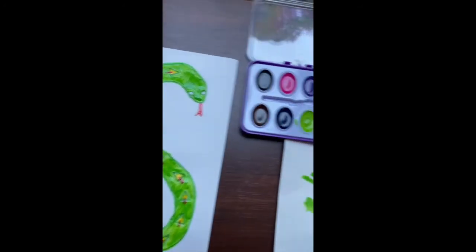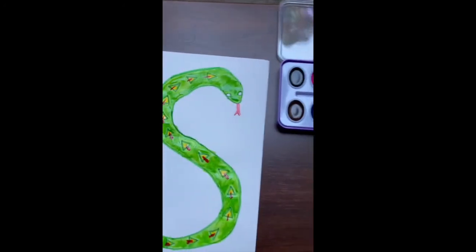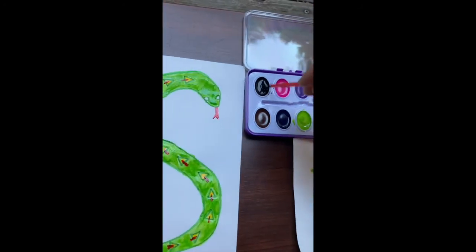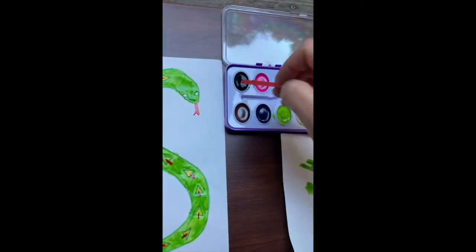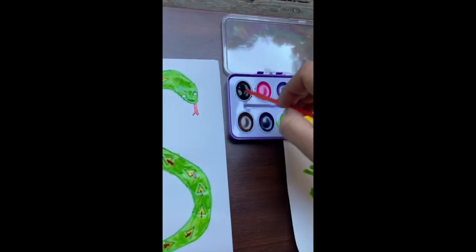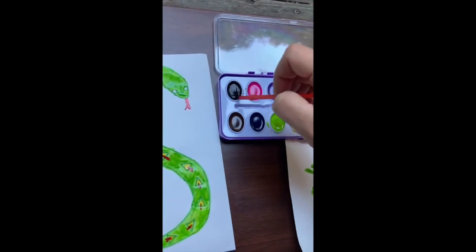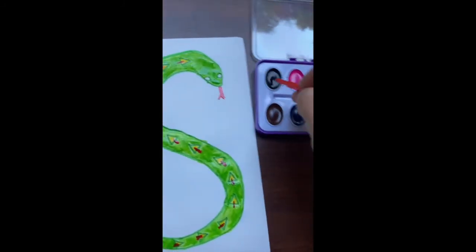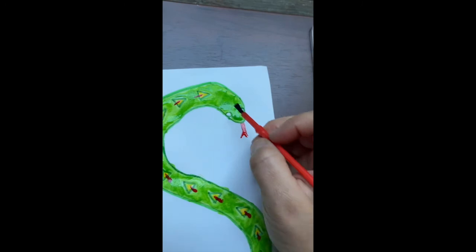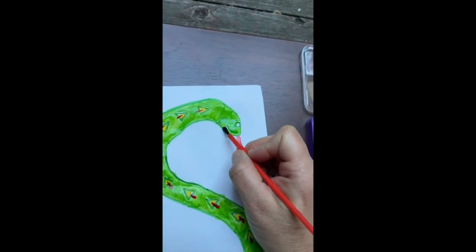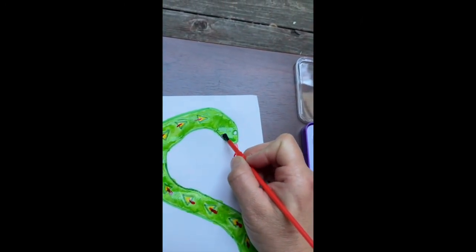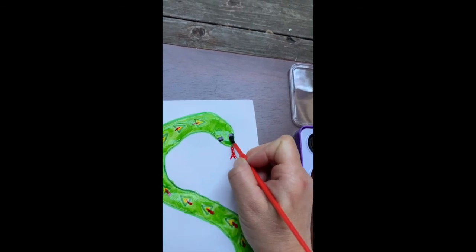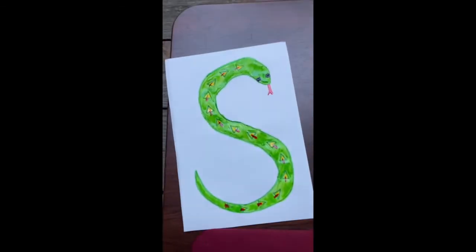And then the last color we need is black. I think it's this one. And again, just like with the red, I'm just adding a little bit of water, but I'm really mixing it in so it's very concentrated and not super watery. Let's test that. Perfect! And then we'll just do one eye and the other. Yay!